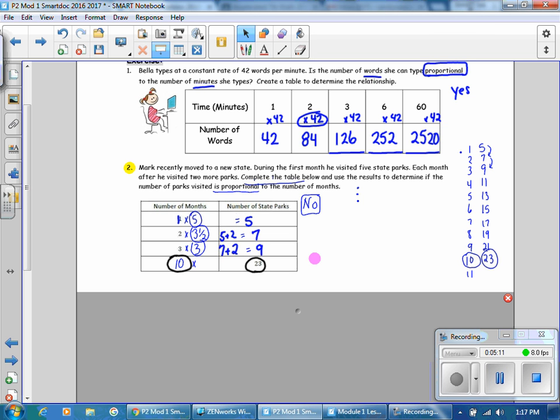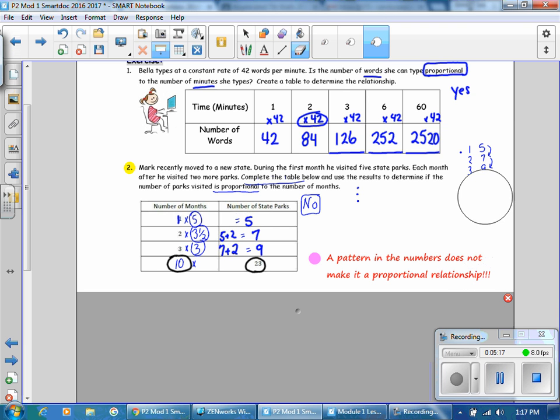Keep in mind, a pattern in the numbers does not necessarily mean that it is a proportional relationship. Five, seven, nine is a nice pattern, but without the same multiplier, that is not a proportional relationship. And this is an important concept right there.